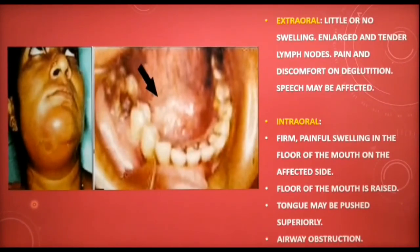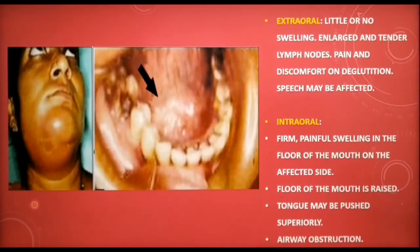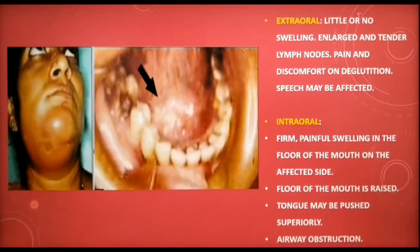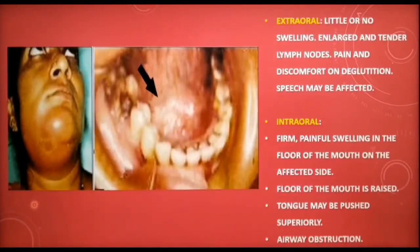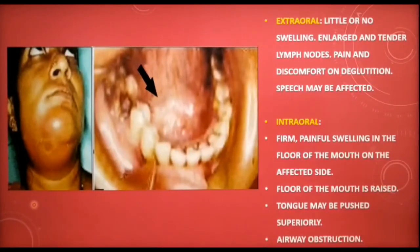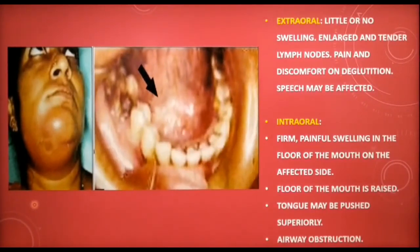Intraorally, a firm painful swelling is seen in the floor of the mouth on the affected side. The floor of the mouth may be raised and the tongue pushed superiorly. Elevation of the tongue is the clinical hallmark of sublingual space infection. This may cause airway obstruction. The ability to protrude the tongue beyond the vermilion border of the upper lip is also an important sign.